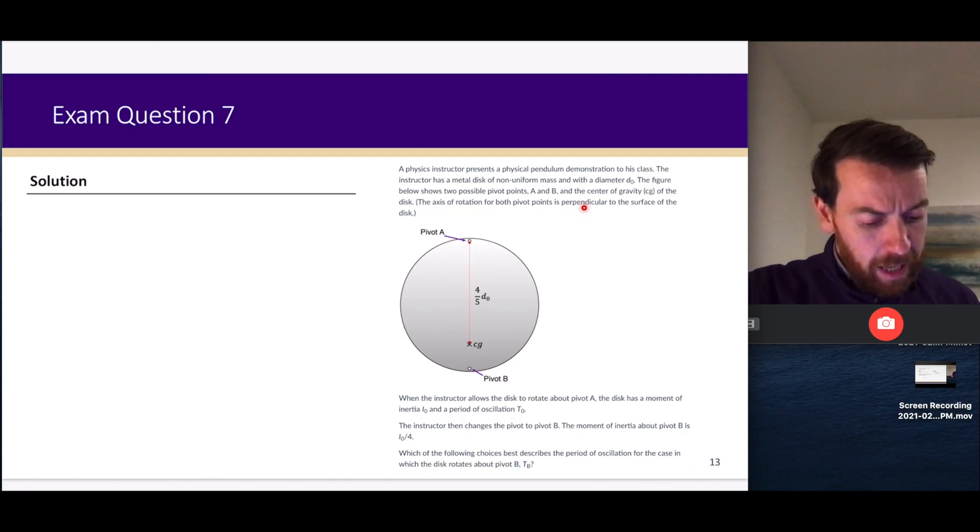The axis of rotation for both pivots is perpendicular, as if you're going to take the disc and hook it onto a nail and just let it oscillate back and forth. When the instructor allows the disc to rotate about pivot A, the disc has a moment of inertia I₀ and a period of oscillation T₀.